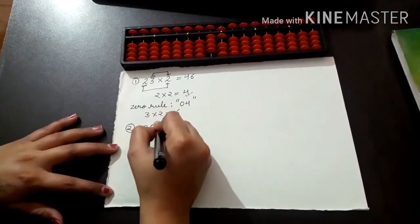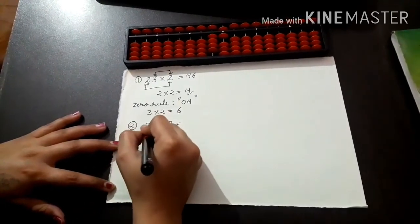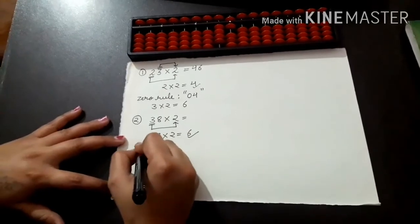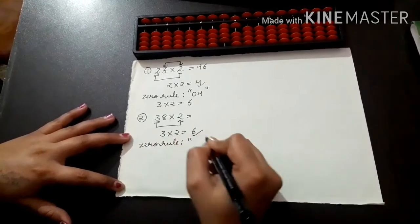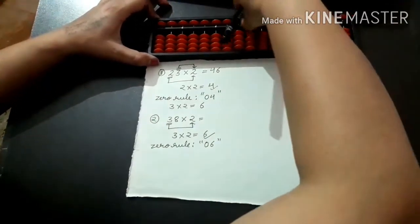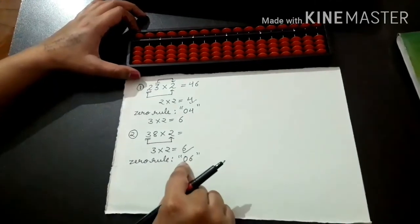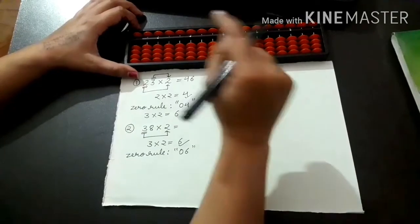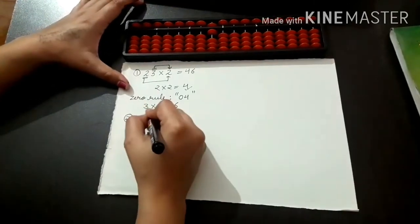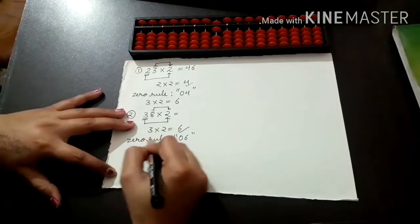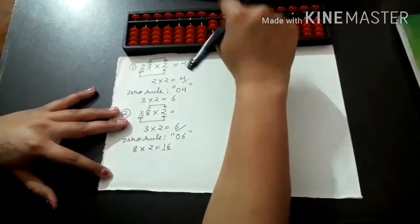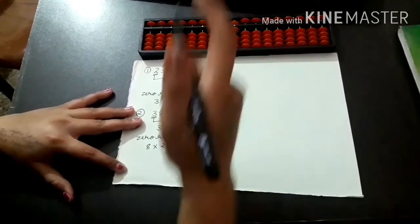The next question is 38 into 2. First multiply the first digit: 3 into 2 equals 6. Again it is a single digit number, so we apply the zero rule and write 06. Set your Abacus again. Zero in the hundreds rod means nothing. For 6 in the tens rod we apply 5 plus 1 bead. Next digit: 8 into 2 equals 16, so 1 goes in the tens rod and 6 goes in the units rod. The answer is 76.